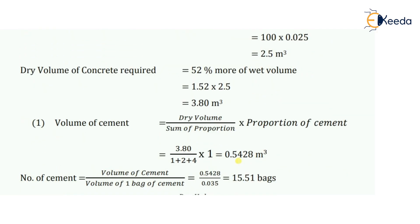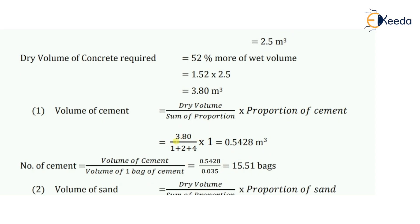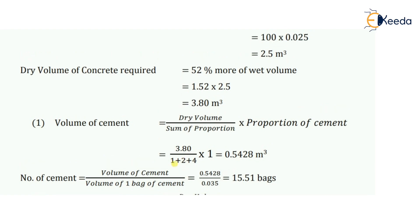Now let's calculate the volume of cement. The formula is: dry volume divided by sum of proportions, multiplied by proportion of cement. Dry volume is 3.80 cubic meters, divided by the sum of proportions 1+2+4 = 7, multiplied by proportion of cement which is 1. This gives 0.5428 cubic meters as the volume of cement.